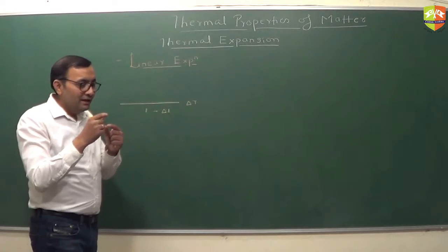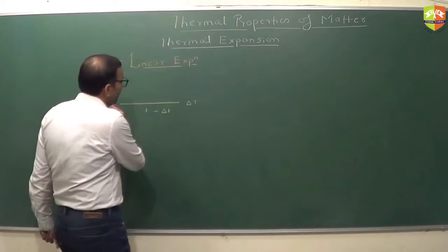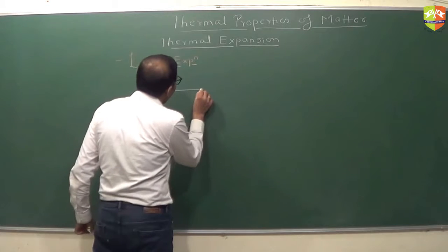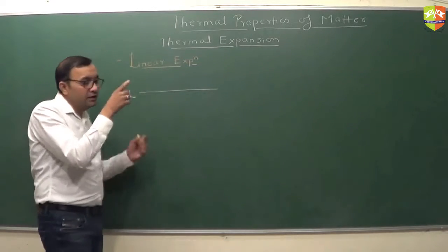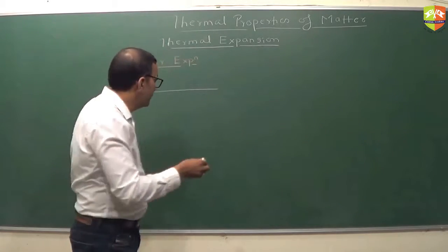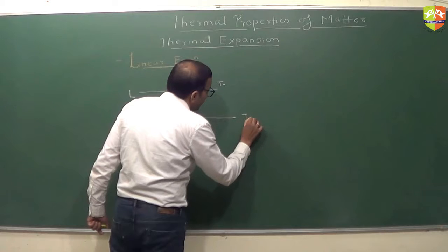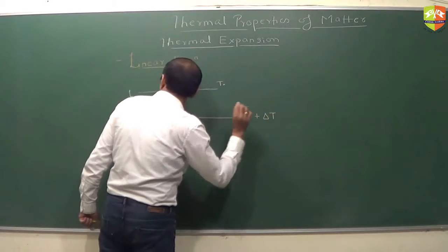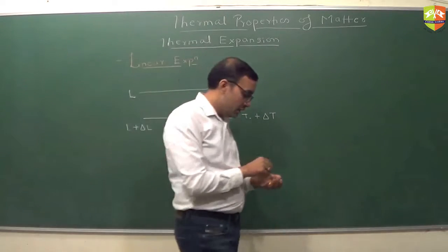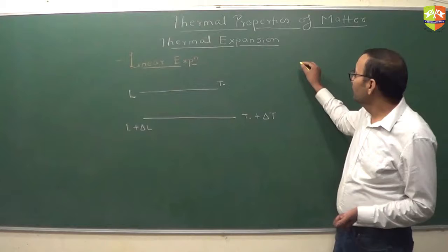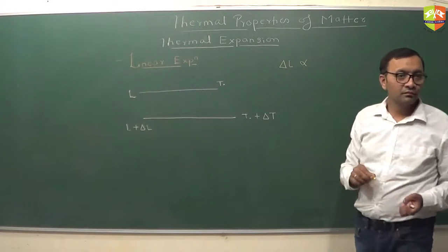You assume a linear increase with temperature. Now, suppose I take a rod with length L. You provide heat to the rod and its temperature changes from T0 to T0 plus delta T — so the increase in temperature is delta T. The length increases to L plus delta L. Now, this delta L increase in length should be proportional to delta T.